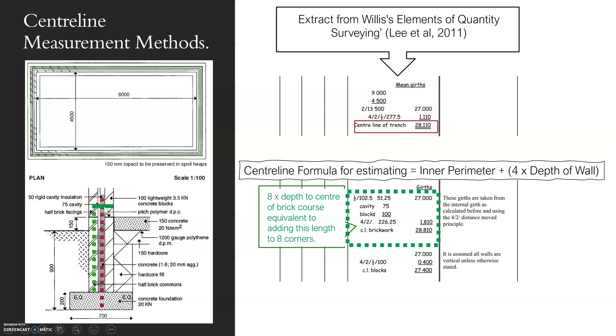We know that the blockwork is 100, the cavity 75 and the bricks are 102.5. But we need half of those bricks, which is 102.5 divided by two, which is 51.25. Add them all together - what have you got? 226.25. Times it all together.